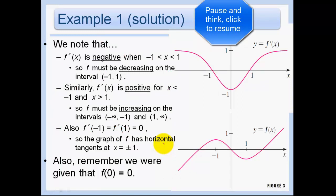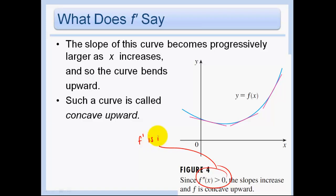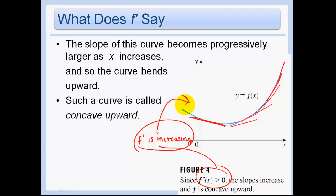To summarize: the slope of the curve becomes progressively larger as x increases, so the curve bends upward — such a curve is called concave upward. f prime prime greater than 0 means that f prime is increasing. It's constantly increasing, so it doesn't matter that f prime started off negative; over time it's becoming more and more positive. f prime prime greater than 0 means f prime is increasing, which means the function is concave upward.